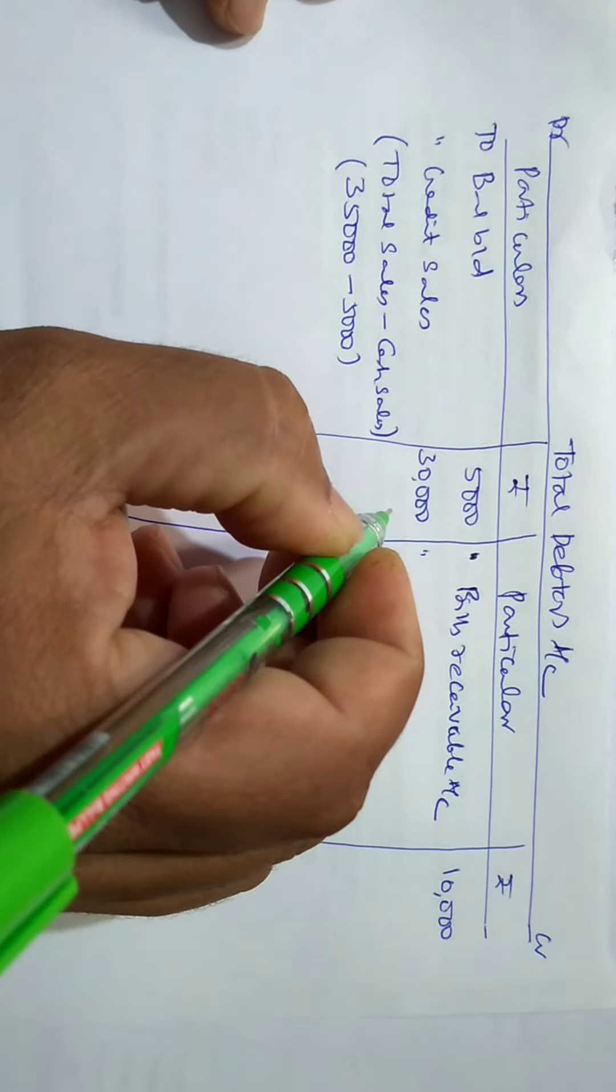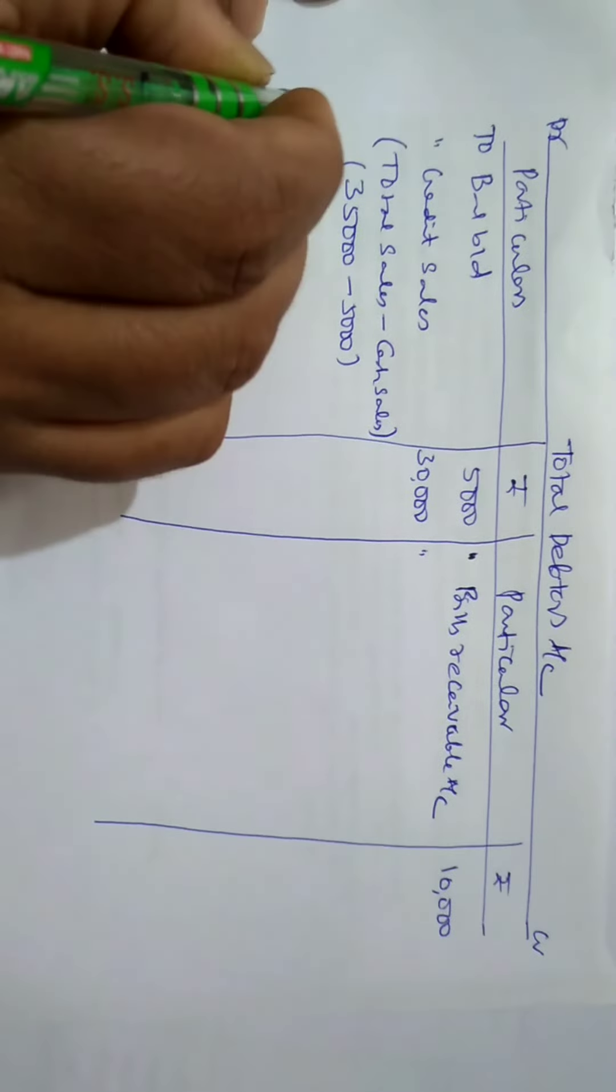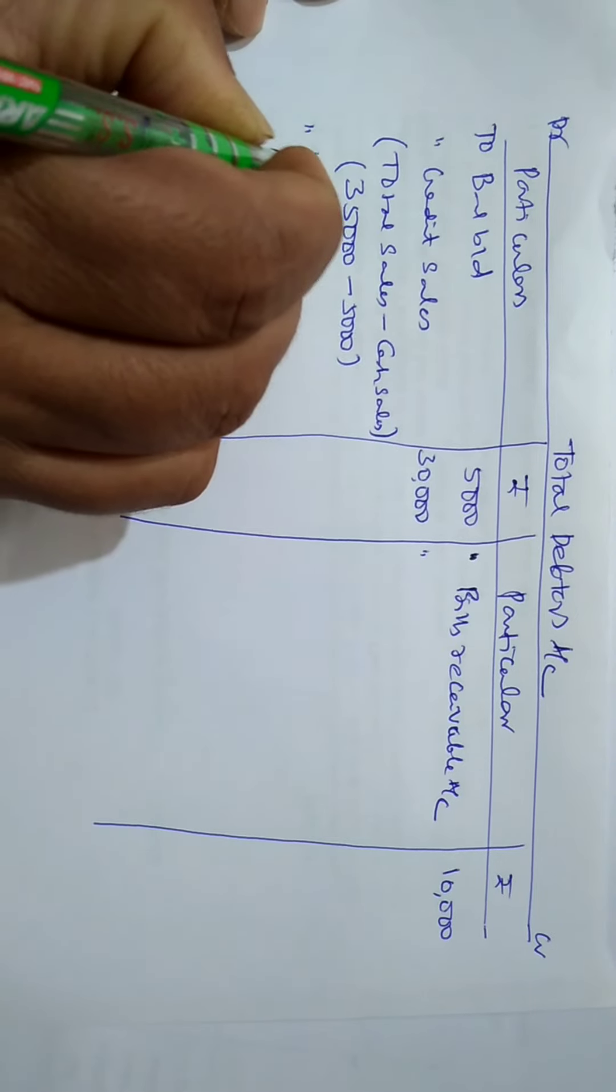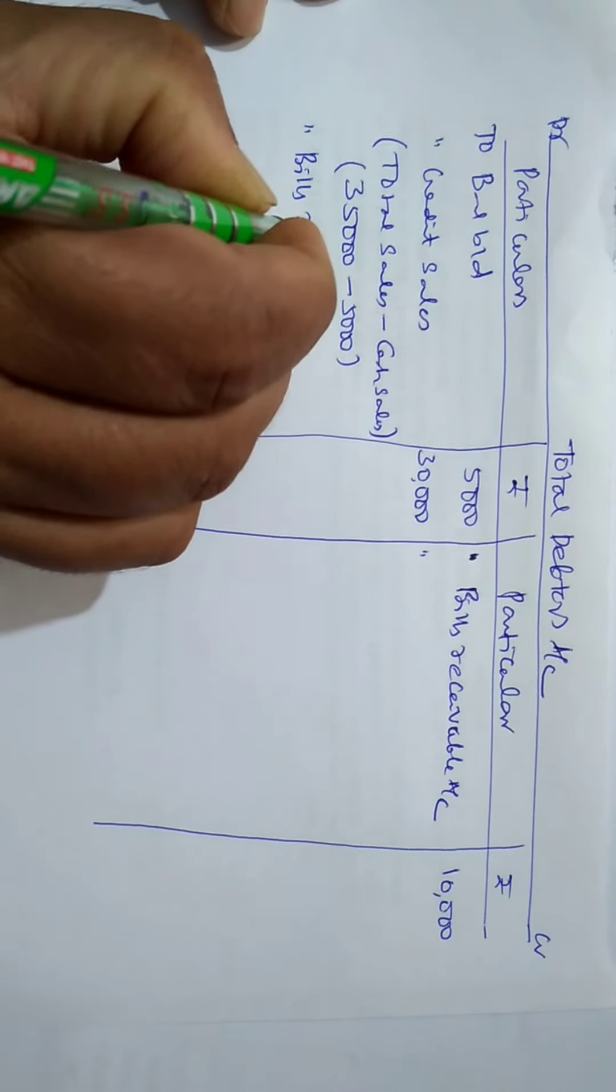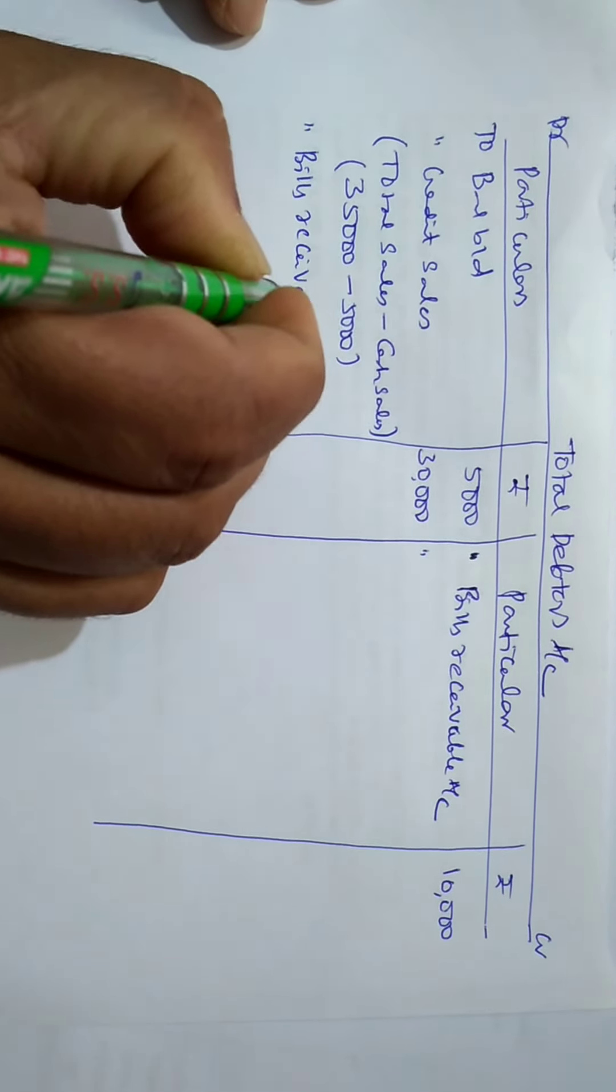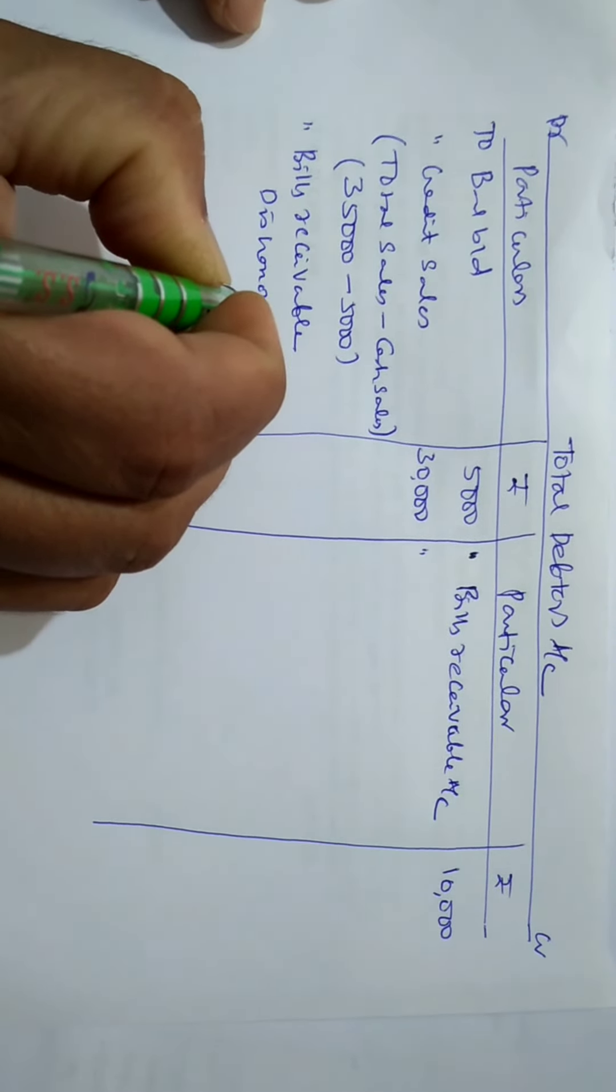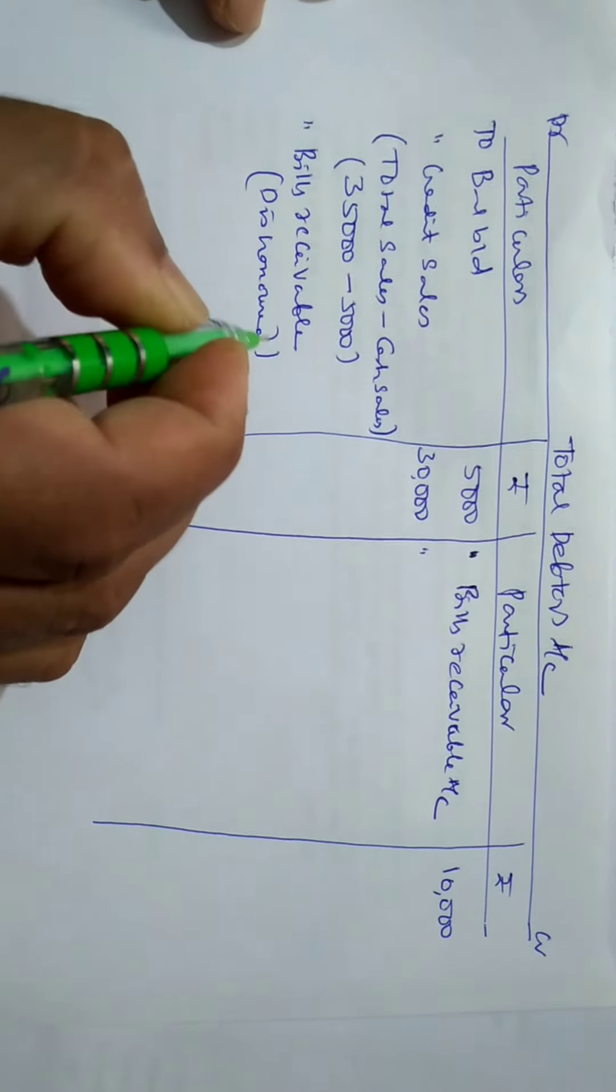Then, there is bills receivable dishonored. When there is a bills dishonored, we must take bills receivable, bills receivable. So, this is the dishonored, so the amount is Rs. 2,000.